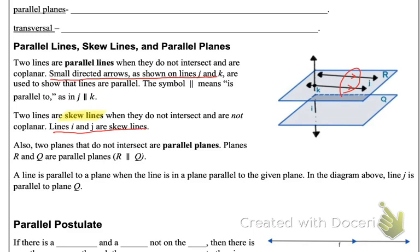Our skew lines would be examples of line I that's going vertical and line J that's not intersecting it. You can see parallel planes would be plane R and plane Q. And then our last one is the line J is parallel to plane Q because it's on a separate plane.